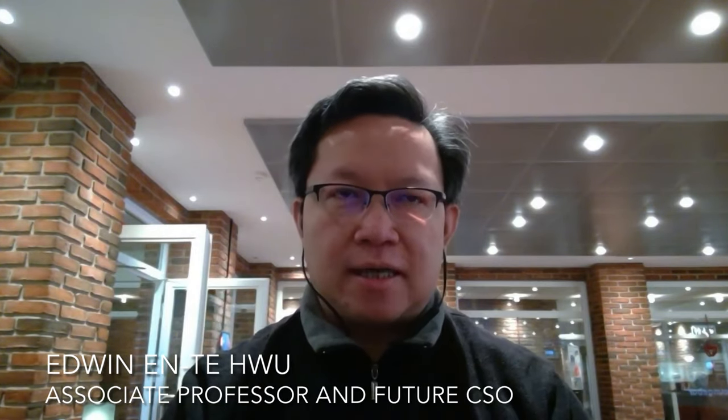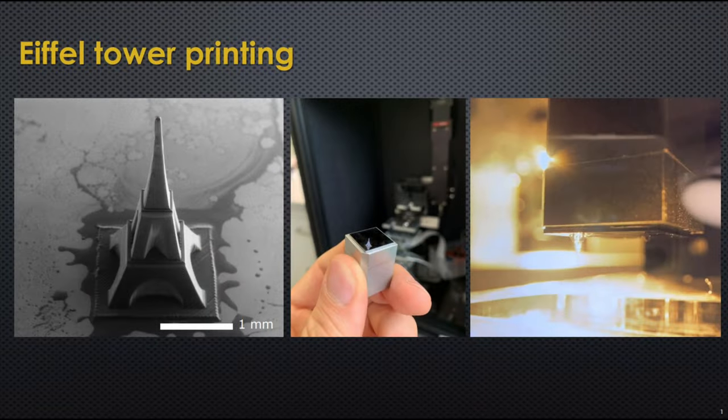We are trying to build a 3D printer that can print at micro and nanoscale. Our core technology is to shrink the very large professional microscope into a fist-size format. We use this fixed-size, high-quality optics for 3D printing in micro and nano resolution over a large area, and we can have multi-material printing.